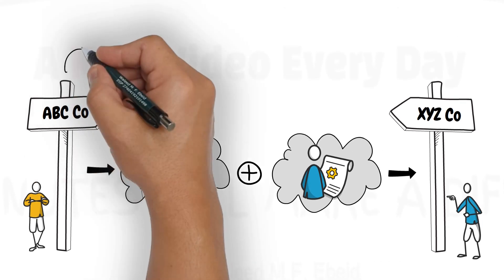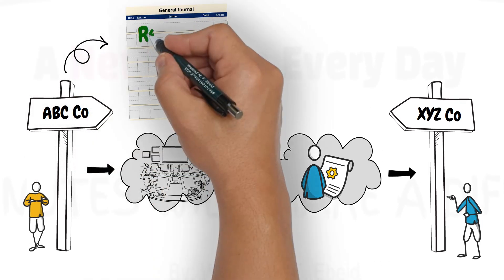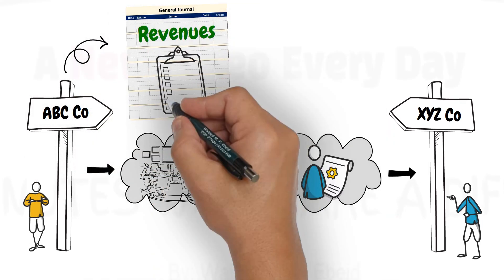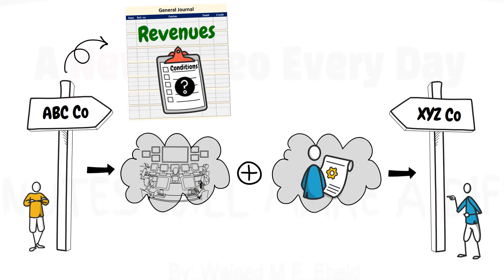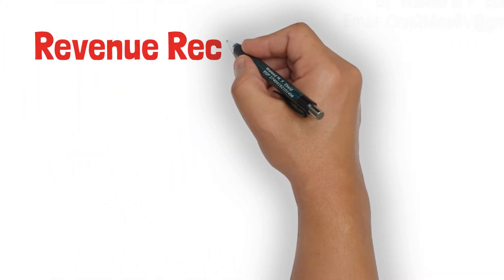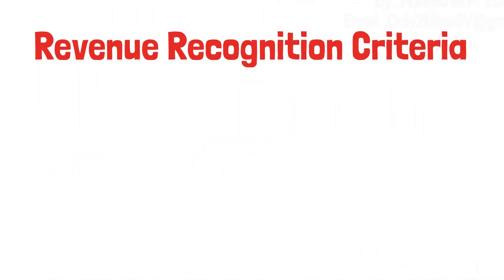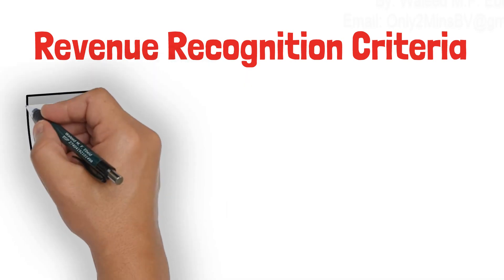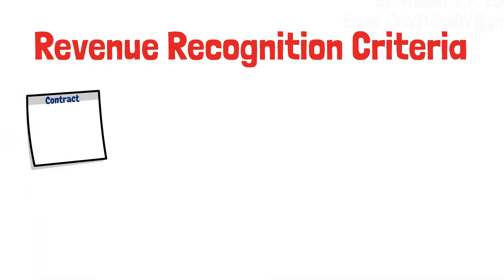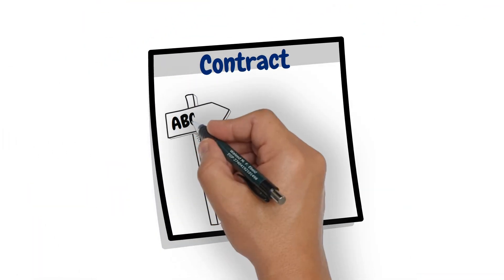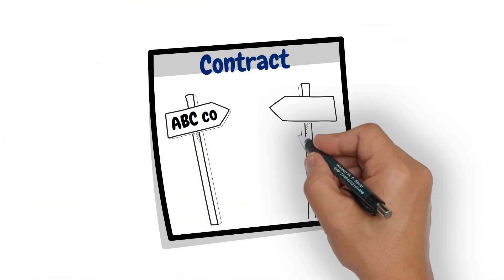For ABC to recognize revenues from that agreement, few conditions should be met. The first condition: there should be an identified contract between ABC and XYZ companies.